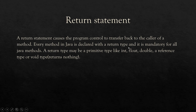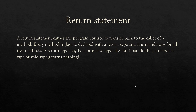Every method in Java is declared with a return type and it is mandatory for all Java methods. A return type may be a primitive type like int, float, or double, a reference type, or void — void means it returns nothing. Every Java method must have a return type; if it is not returning anything it should return void, otherwise it should return any valid data type.